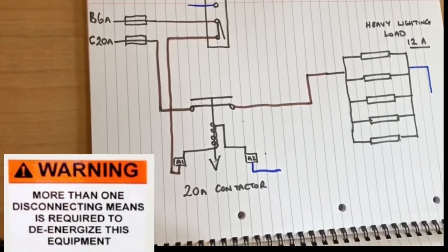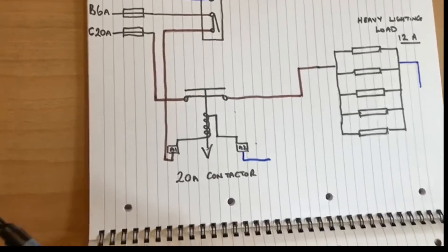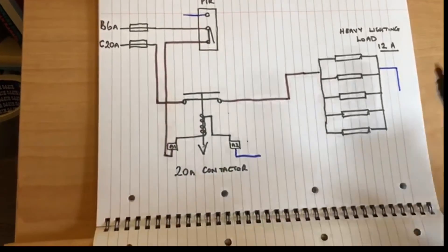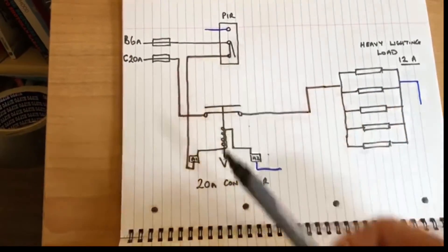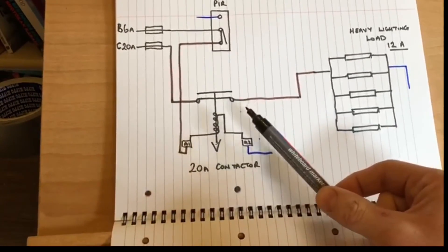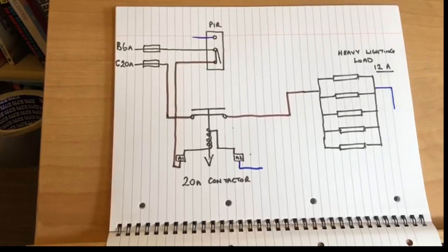So the beauty with this circuit, you've got a very heavy load here. None of that load is going through the PIR, it's all going through the contactor, and the circuit will work nicely.